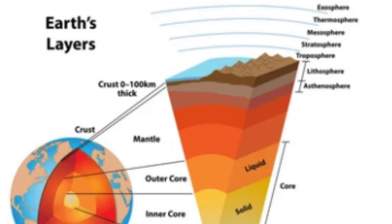Oceanic crust is generally thinner and more uniform in thickness, typically ranging from about 5–10 km. This relatively consistent thickness is largely due to seafloor spreading at mid-ocean ridges, where new oceanic crust is continuously formed. Overall, the average thickness of the Earth's crust globally is estimated to be around 30–50 km, though actual thickness can vary significantly depending on tectonic activity, geological history, and other factors.